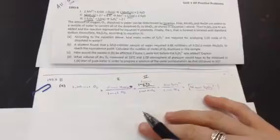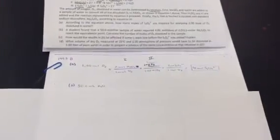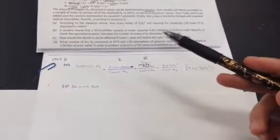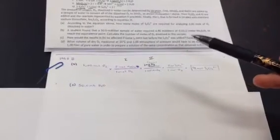Chances are we're going to need this information later. If you wanted to make sure we could do some stoichiometry. Alright, so next. We've got a student found that a 50 milliliter sample, so immediately I'm going to write down, I've got 50 milliliters of water. That's required to titrate 4.86 milliliters of a 0.0112 molar solution of sodium thiosulfate.